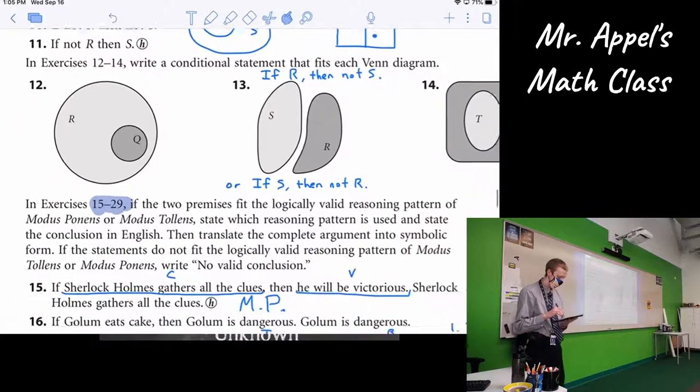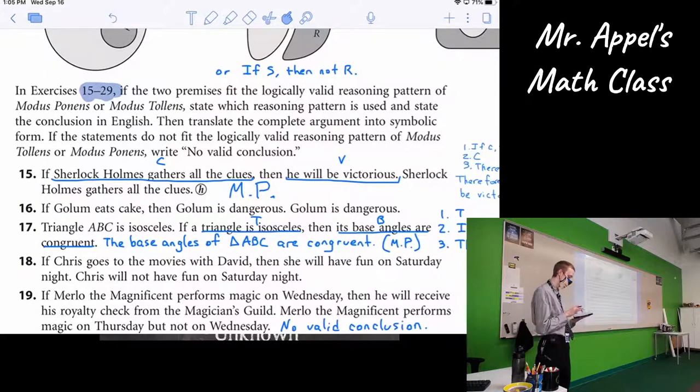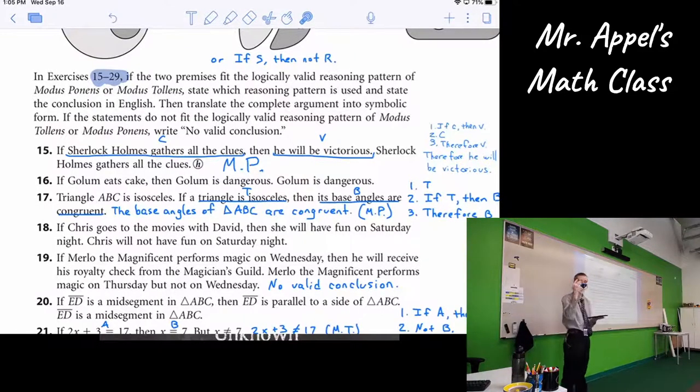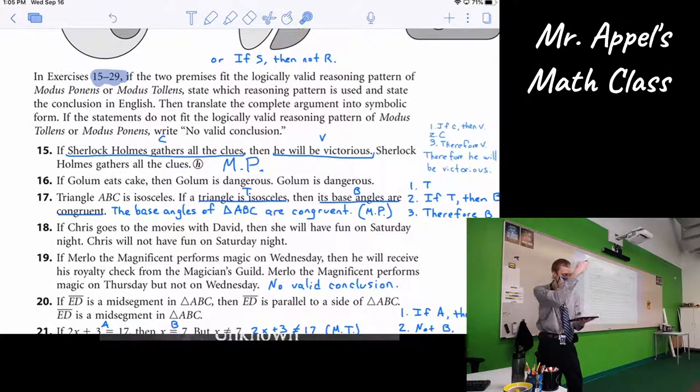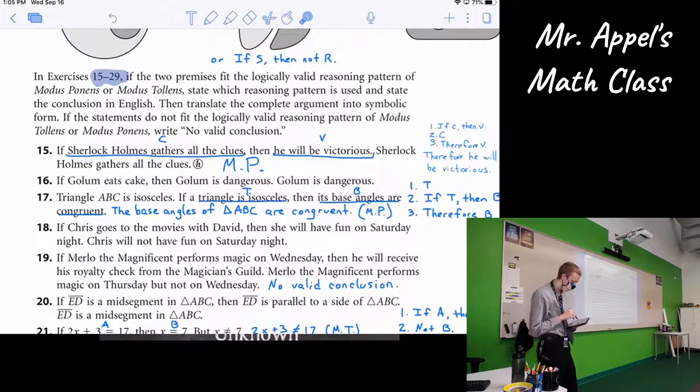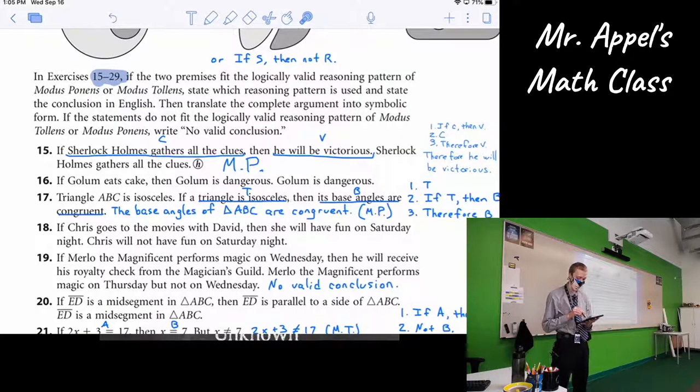Okay. Then for the next bit, in 15 through 29, this is where you really had to start thinking through these things. They would present you with most of an argument, the premises. You had to come up with what, if anything, was the conclusion, a valid conclusion. And then if you did find one, what process did you use and outline it with the symbols? So I had already done 15 in class yesterday. I had to shrink it there to make room. So the next step is 17. 17 says triangle ABC is isosceles. If a triangle is isosceles, then its base angles are congruent.